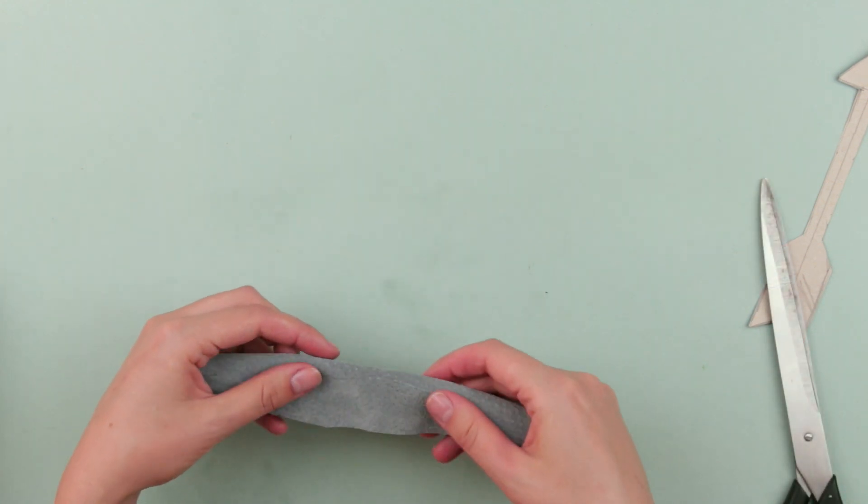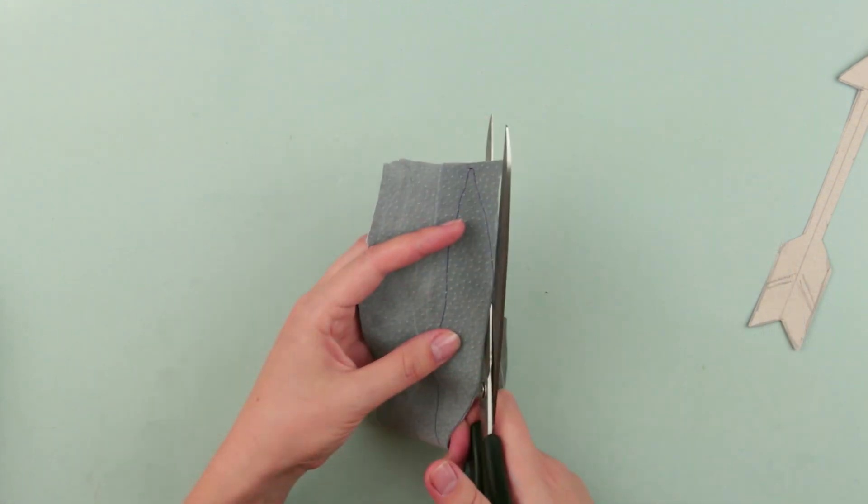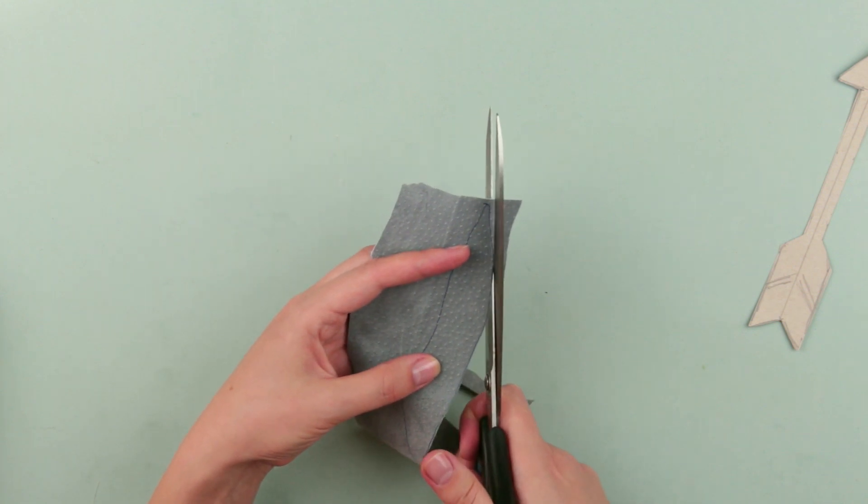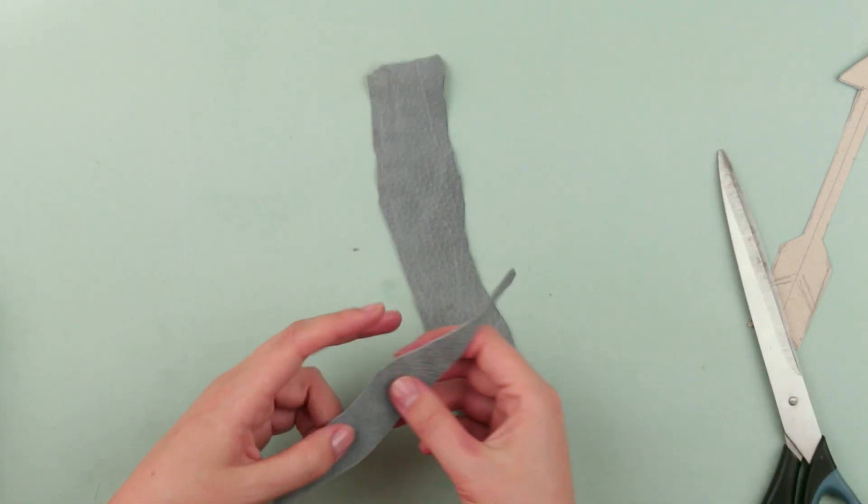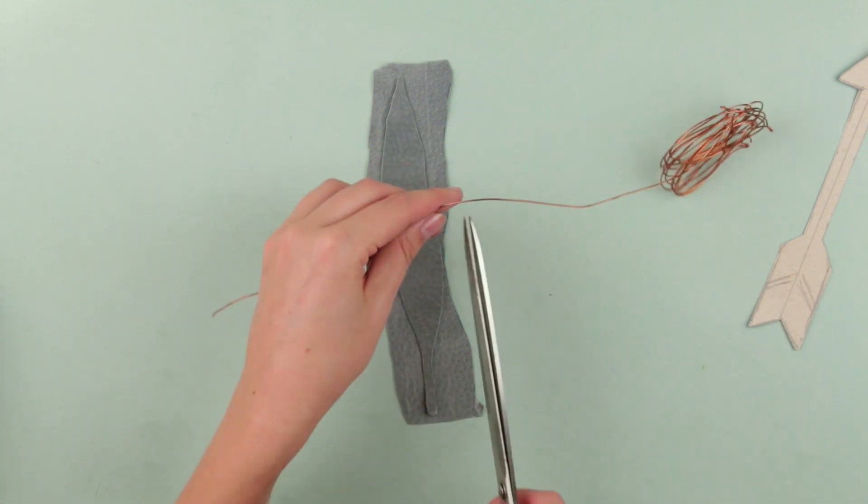Fold in half with the image on top. Cut out the leaf. Measure out a piece of the wire a bit shorter than the leaf. Cut it out.